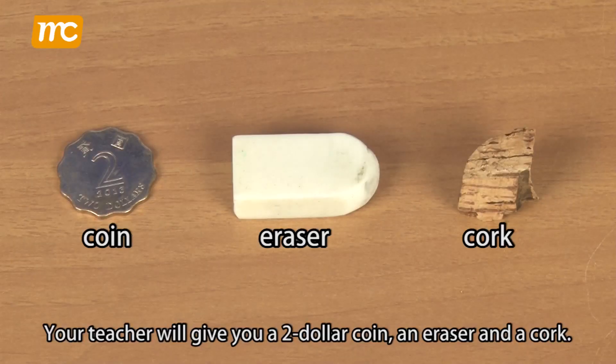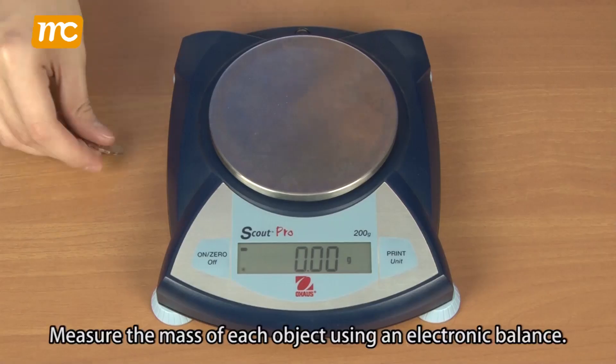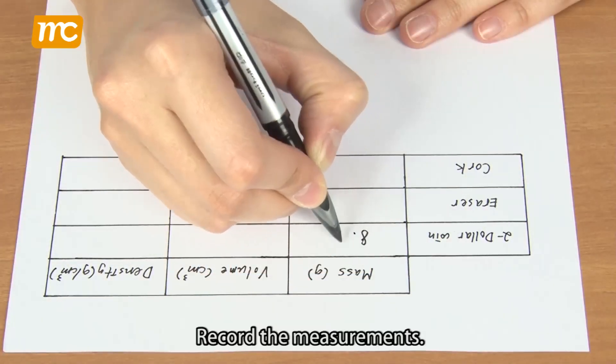Your teacher will give you a $2 coin, an eraser, and a cork. Measure the mass of each object using an electronic balance and record the measurements.